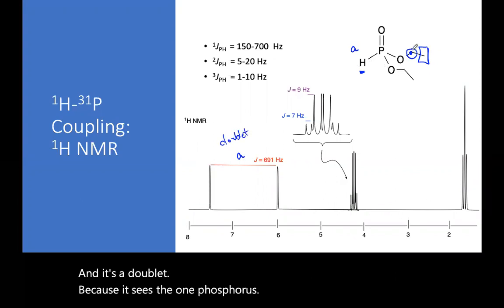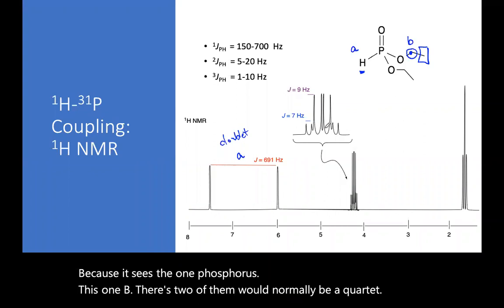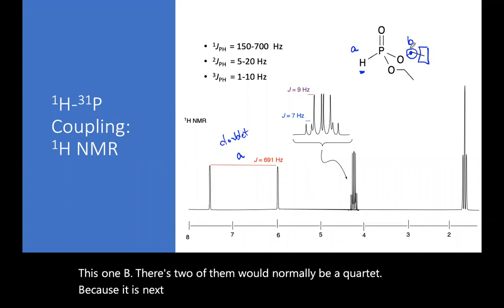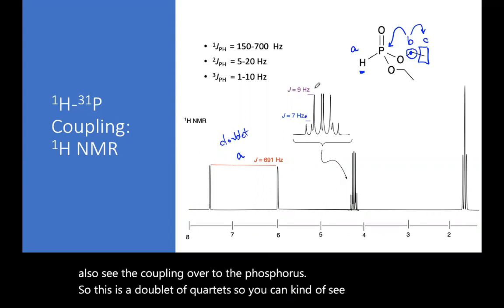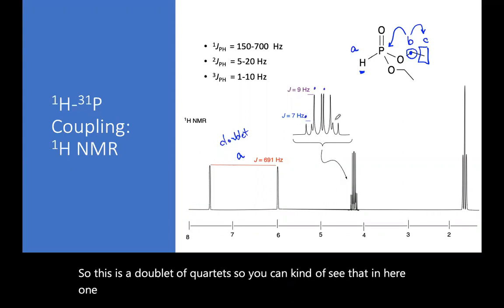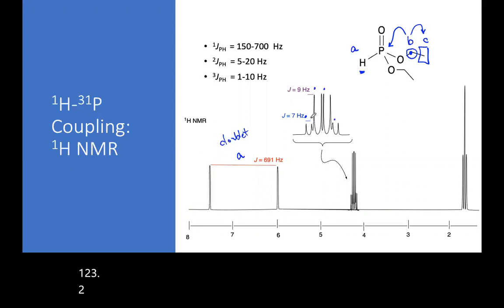This one, B, and there's two of them, would normally be a quartet, because it is next to methyl. So you see the coupling to C, but you also see the coupling over to the phosphorus. So this is a doublet of quartets. So you can kind of see that in here. One, two, three, two, four. And then this would be the other quartet.